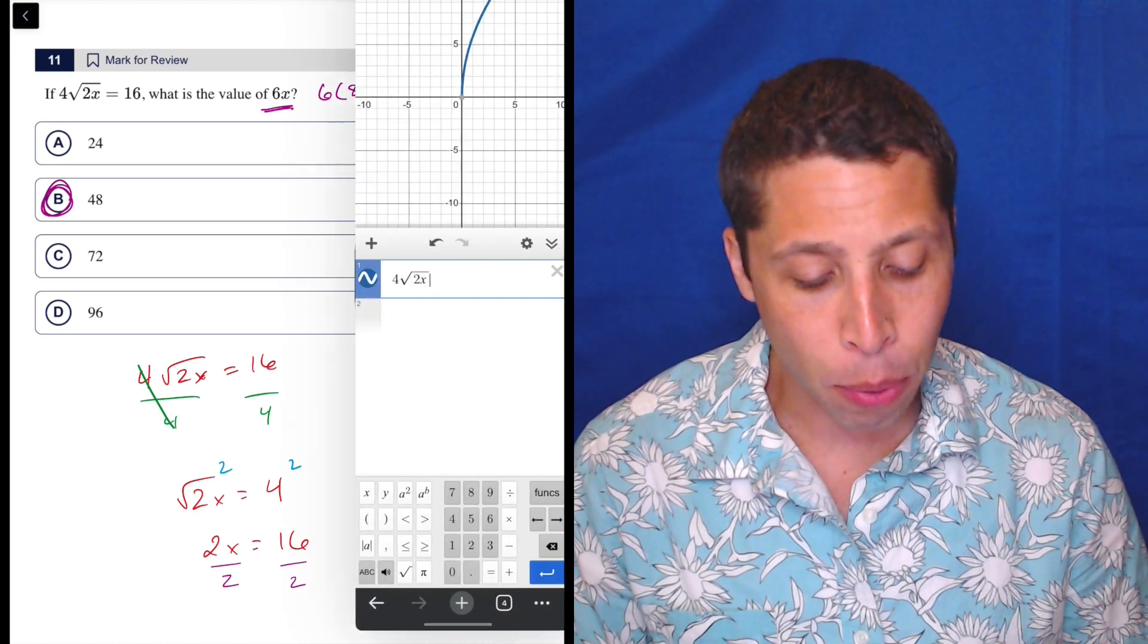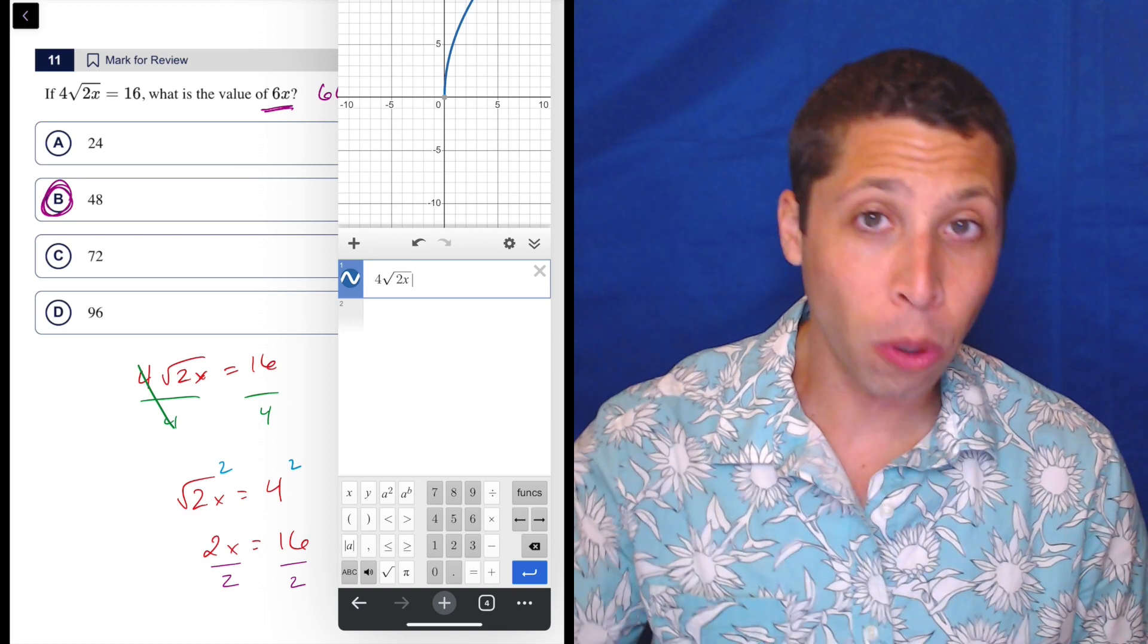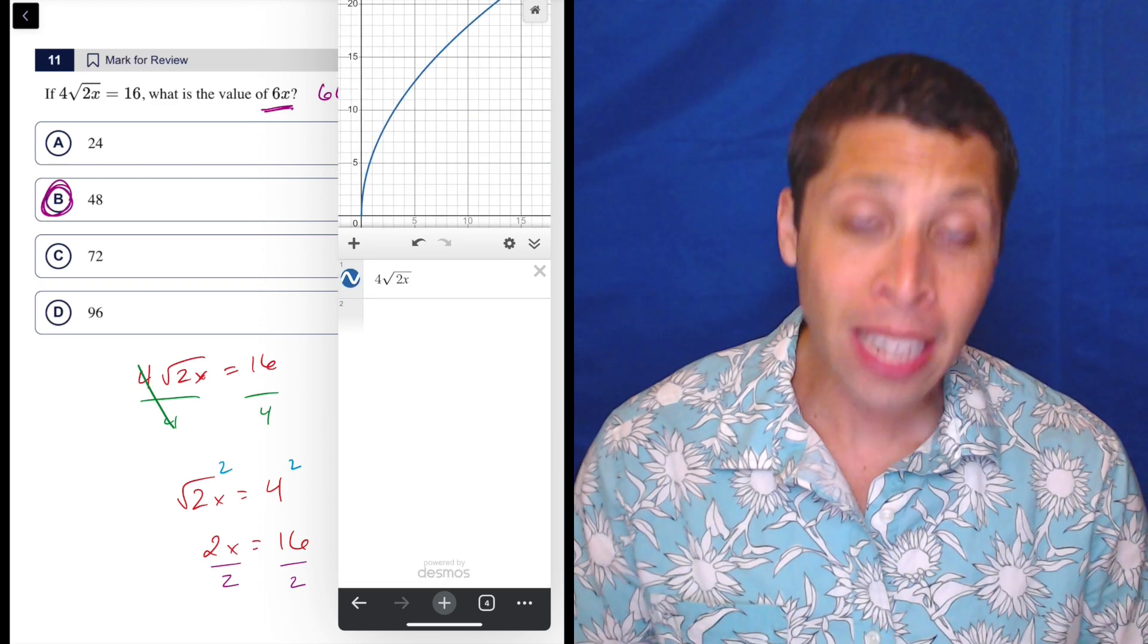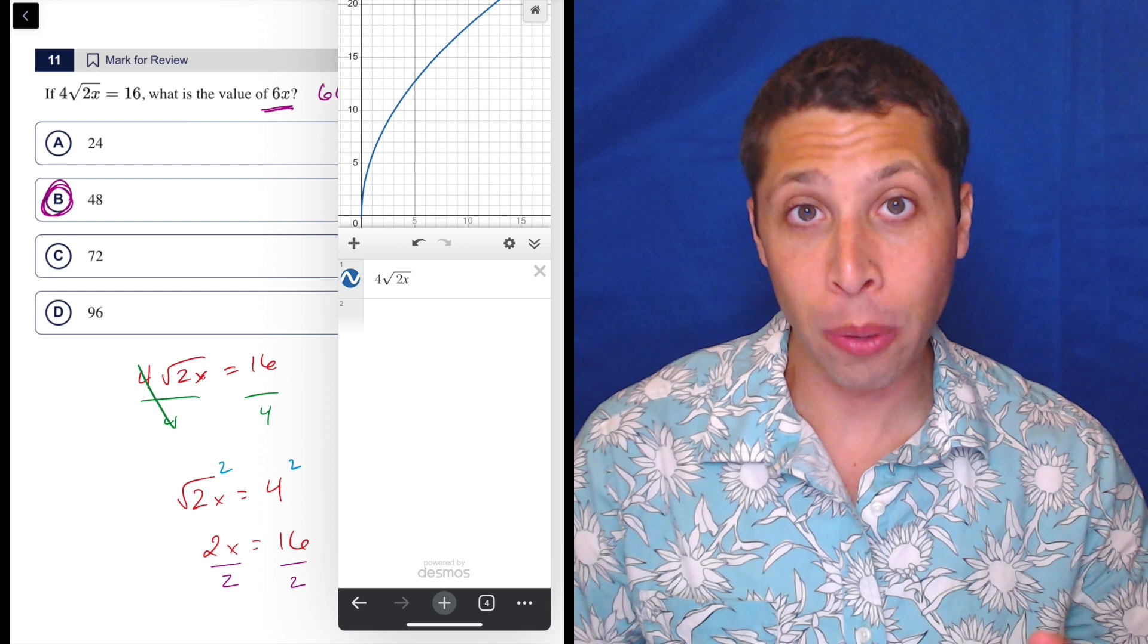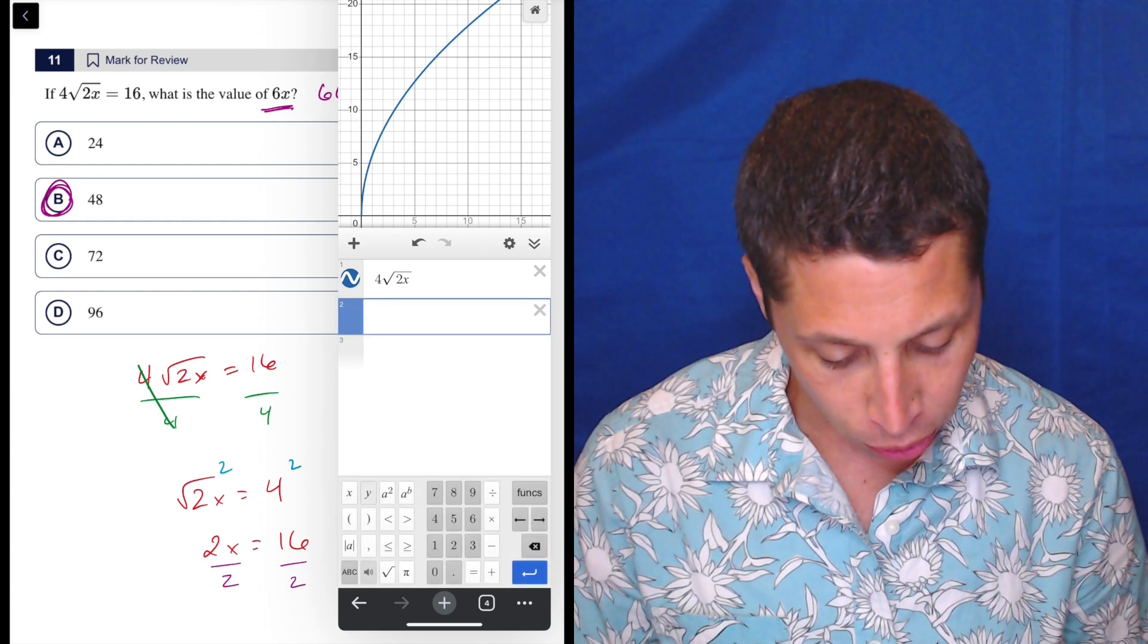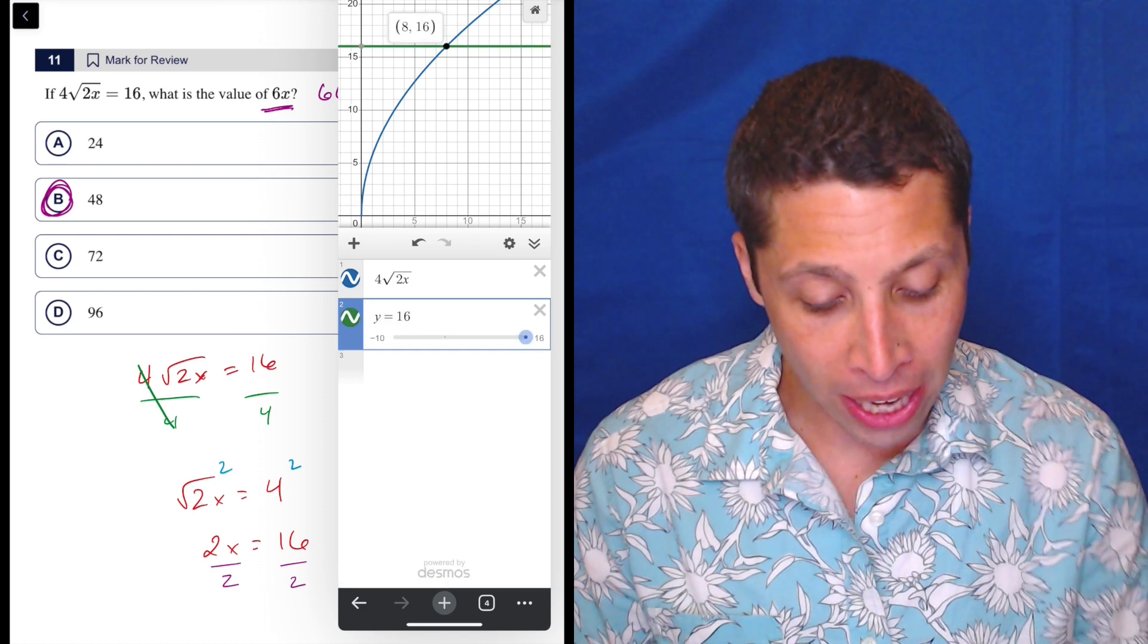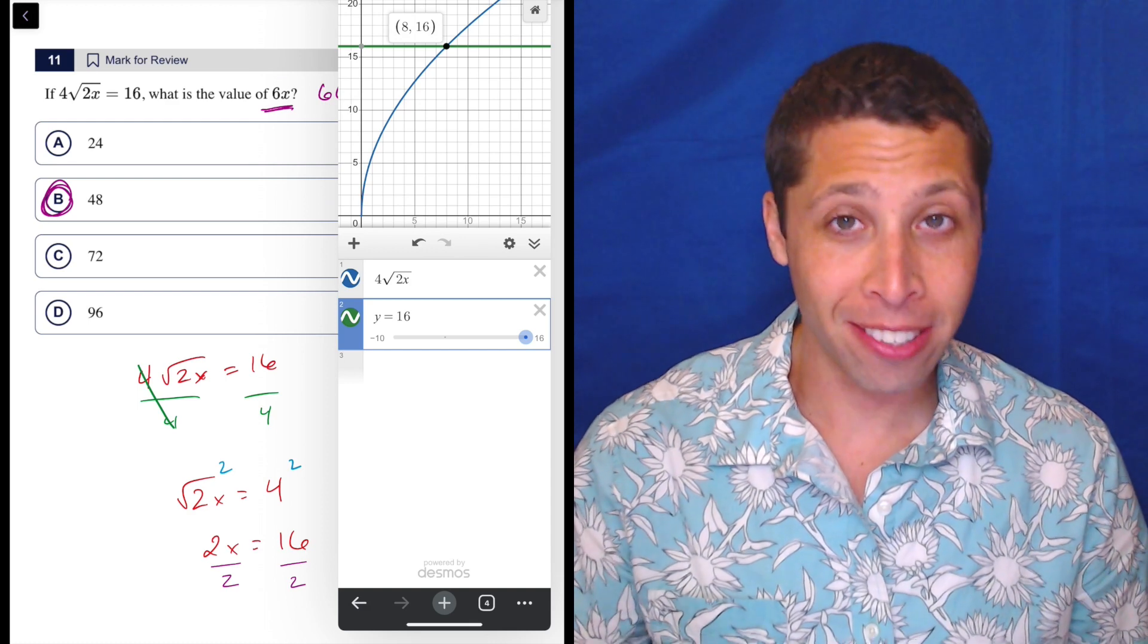So if I put in 4 square root 2x, I will get a curve, and that's because it's a radical, so it's going to have a curve shape. Then what a lot of you will do is set basically another thing equal to 16, so you could just do y equals 16, and think about the point of intersection, and notice that the x value at that point of intersection is 8, which is exactly what we found it to be.